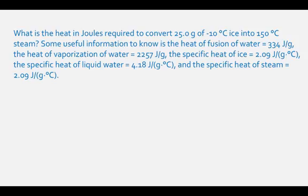What is the heat in joules required to convert 25.0 grams of negative 10 degrees Celsius ice into 150 degrees Celsius steam? Some useful information: the heat of fusion of water is 334 joules per gram, the heat of vaporization is 2257 joules per gram, the specific heat of ice is 2.09 joules per gram degrees Celsius, the specific heat of liquid water is 4.18 joules per gram degrees Celsius, and the specific heat of steam is 2.09 joules per gram degrees Celsius.